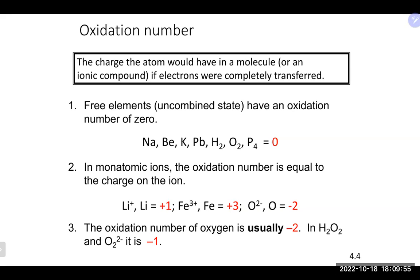Oxygen is a good place to start when assigning oxidation states — it is usually −2. The exception is the peroxide ion O₂²⁻, where oxygen has an oxidation state of −1. Examples include hydrogen peroxide and sodium peroxide. Other than the peroxide exception, oxygen is reliably −2.